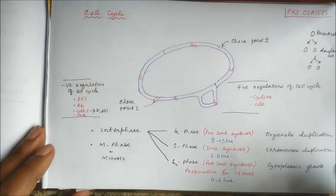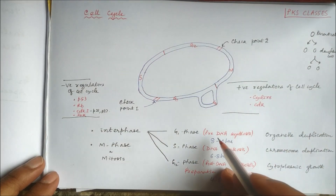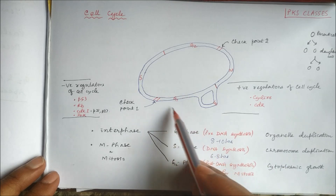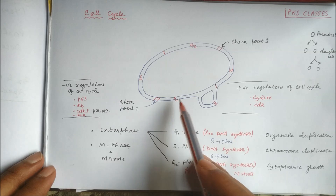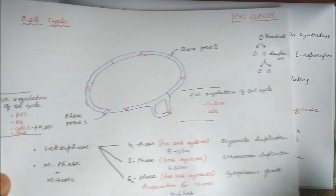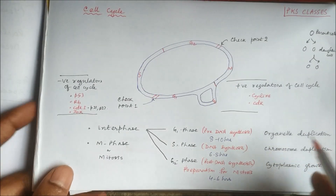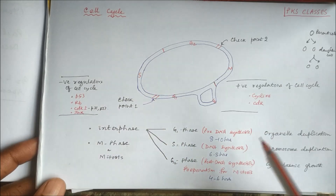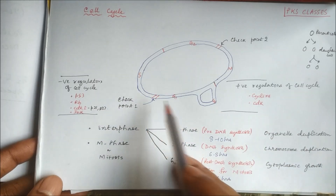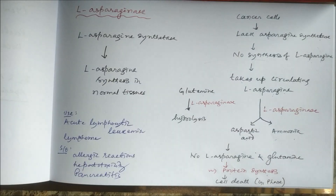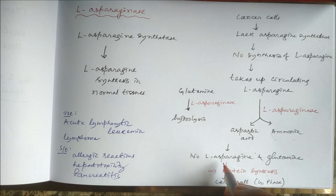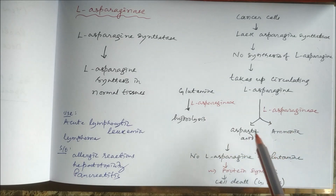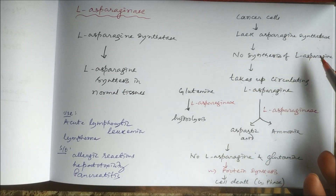Let us recall the cell cycle. The G1 phase is the pre-DNA synthesis phase. In this phase, L-Asparagine is lacking and pre-DNA synthesis is inhibited. So cell division will stop at the checkpoints and there will be apoptosis or cell death. L-Asparaginase degrades L-Asparagine and Glutamine, and cancer cells additionally cannot synthesize these amino acids.